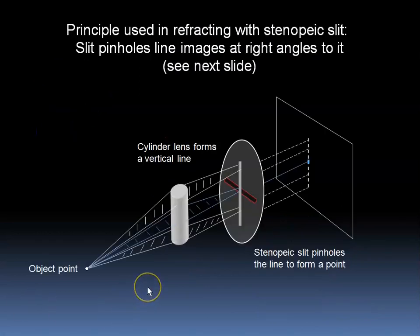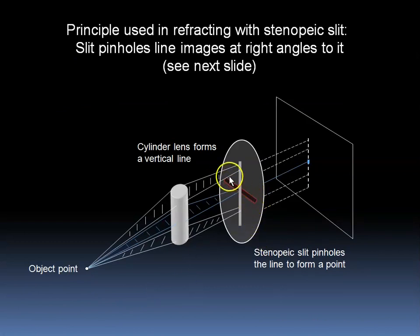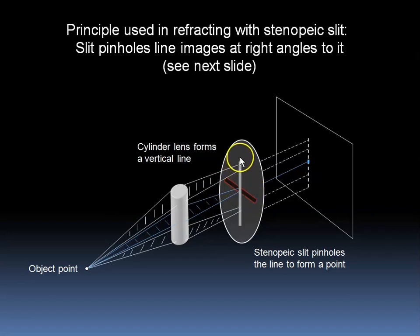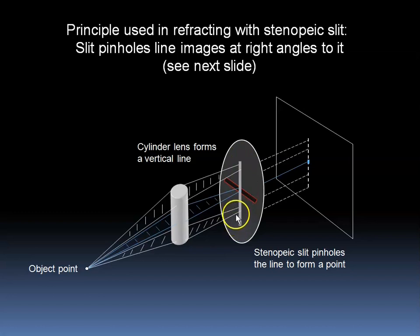Here we discuss the Stenopaeic Slit. The Stenopaeic Slit is a horizontal opening, or aperture, which is much longer than it is wide. It is a form of pinholing in one axis only. In this case, the horizontal Stenopaeic Slit is effectively a pinhole in the vertical axis. In other words, if we shine a line onto the surface at right angles, only a small portion would go through.